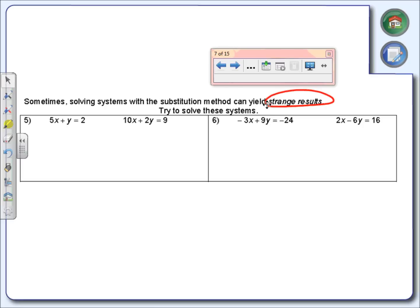Here's number five. We're going to use the same method, substitution. The first thing I'm going to do is get y by itself. I'm going to take that 5x + y = 2 and I'm going to get y by itself, which means I'm going to move that 5x over by subtracting. So there's the first step.